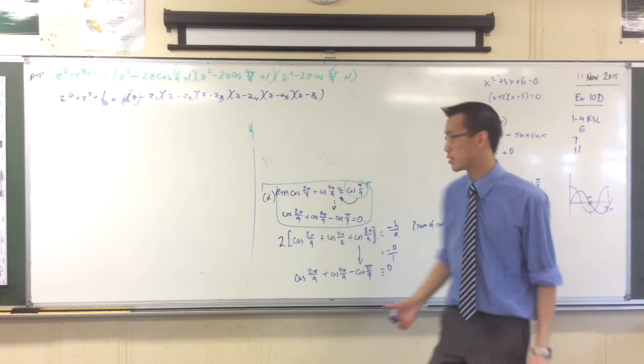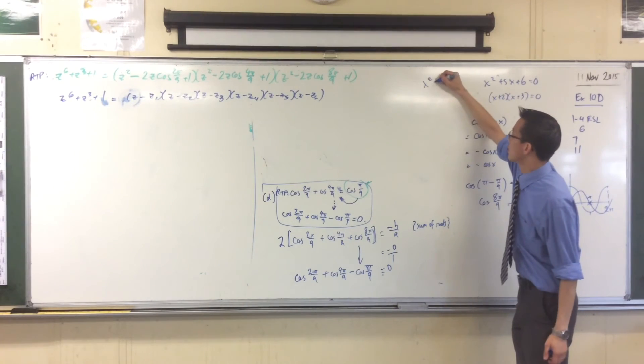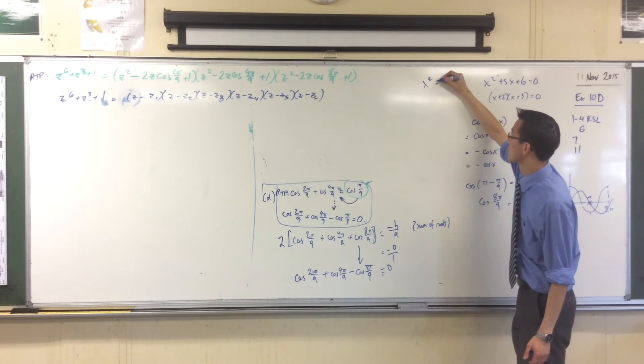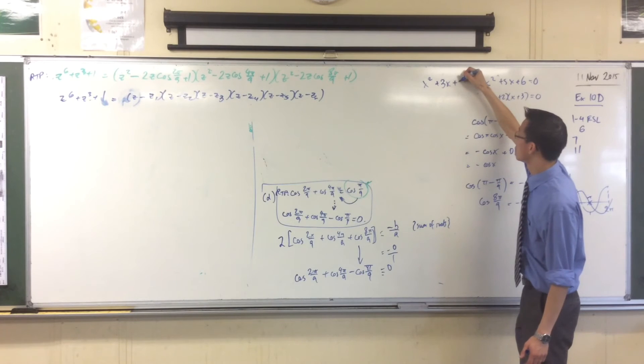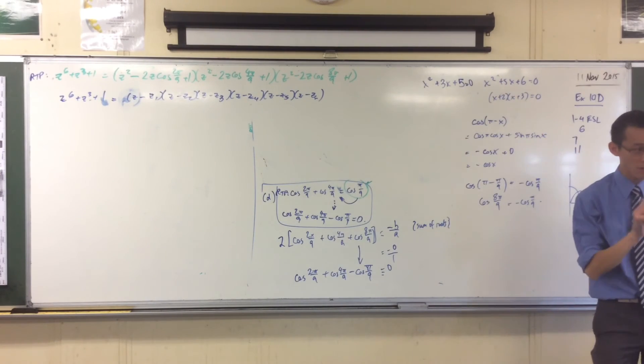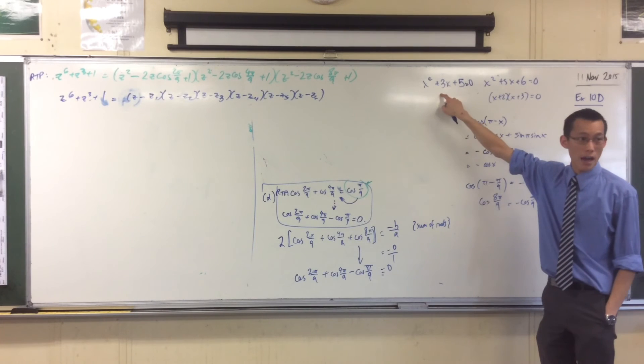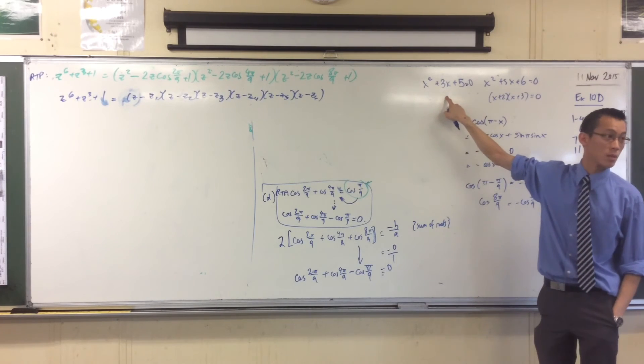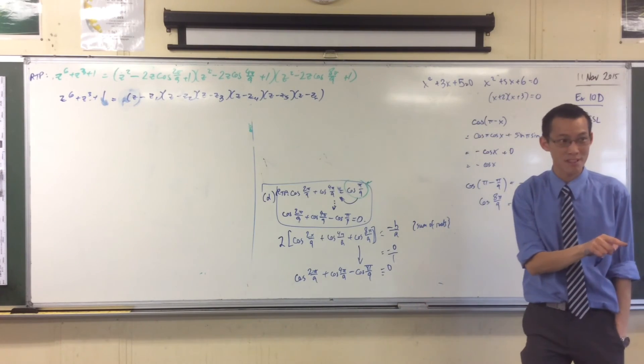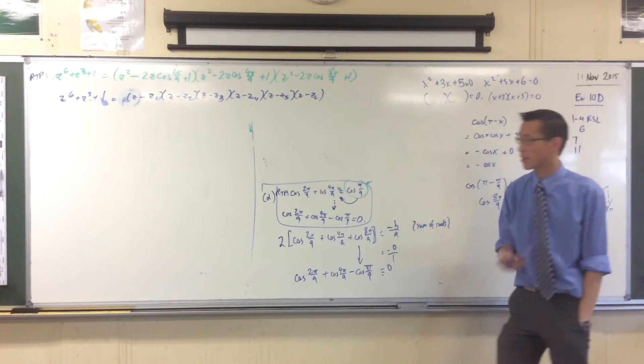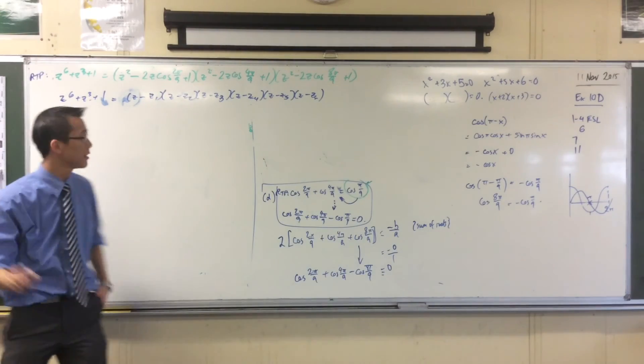For instance, X squared plus 3X plus, I want this to be big, 5. Okay, that'll do. If this got given to you, right, the discriminant of this guy is 9 take away 20, negative 11. You cannot do a linear factorization of this in the real numbers, right? You're stuck. But if you give me complex numbers, I can write a linear factorization like so, right? It'll be weird, but it'll exist. And that's what this is.